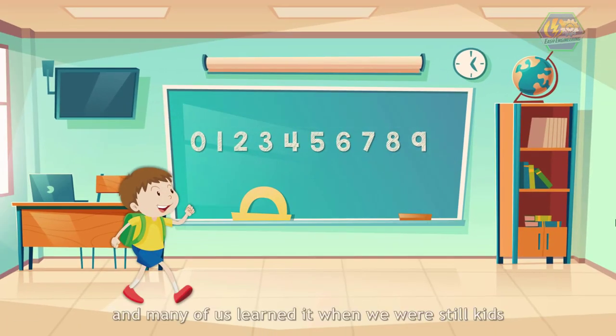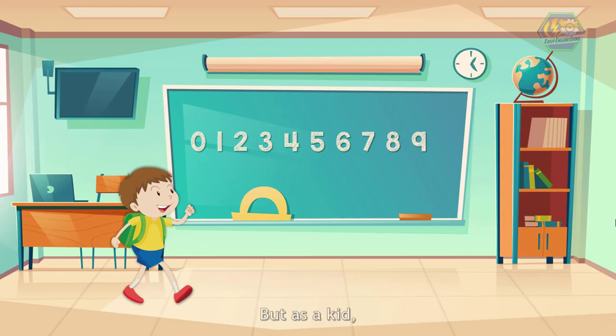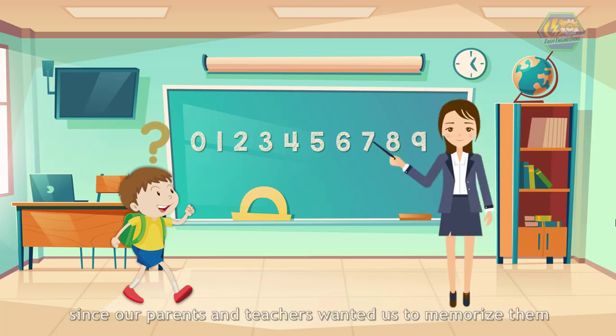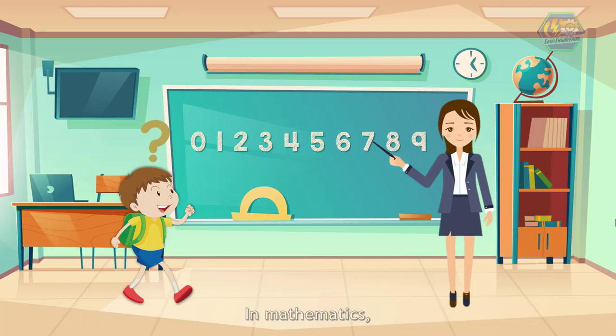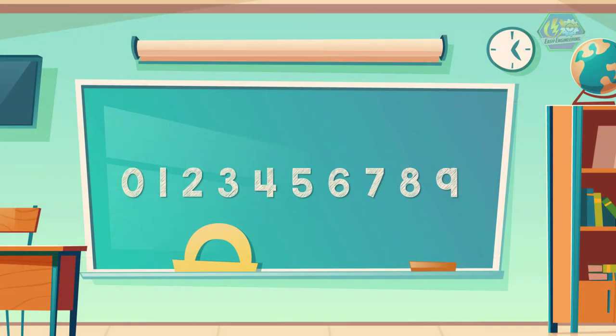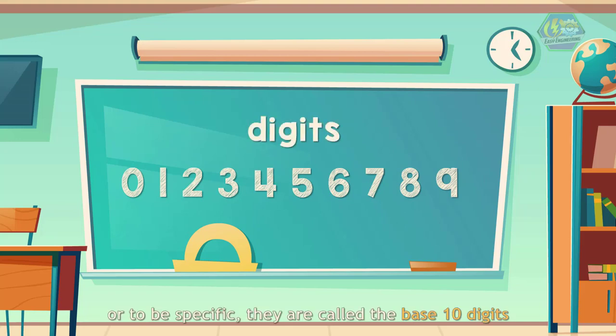Many of us learned it when we were still kids, but as kids we don't really know what these numbers are - we just memorize them since our parents and teachers wanted us to. In mathematics, the numbers 0, 1, 2, 3, 4, 5, 6, 7, 8, 9 are called digits, or to be specific, base 10 digits.